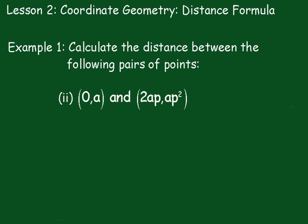And here's an algebraic one. Again I'll do the same thing, I'll just label those points: x₁, y₁ and that's x₂, y₂. D equals square root of (x₂ - x₁)² plus (y₂ - y₁)².